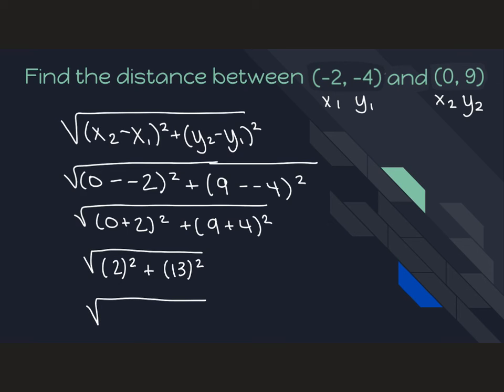2 squared is 4, 13 squared is 169, 4 plus 169 is 173. So the answer to this is the square root of 173.